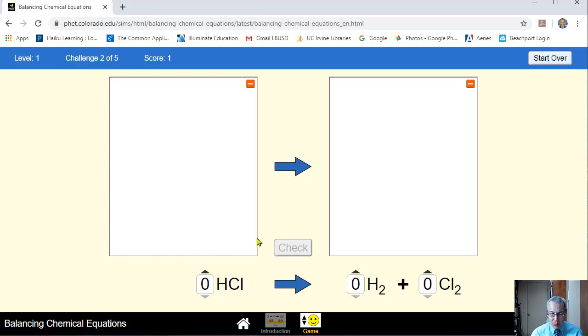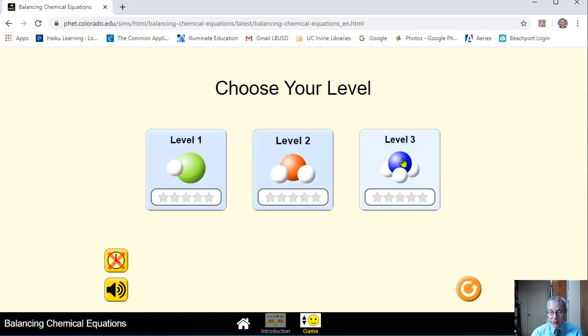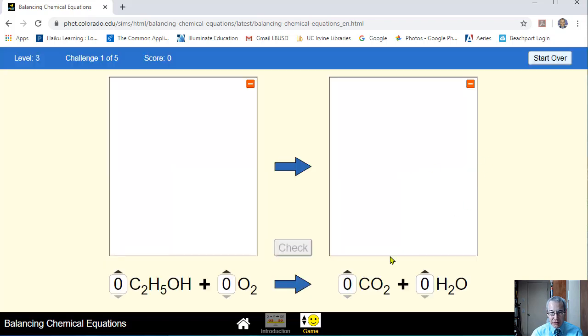So start with level one. When you say that was easy, then up here on the right you can see there's a start over button. You can go to level two and that'll be harder than level one. Significantly harder. And then if you go to level three, they're really challenging. Look at that. That is not going to be easy, is it?